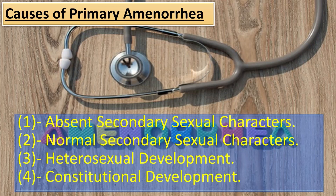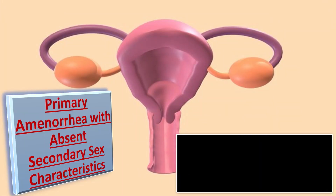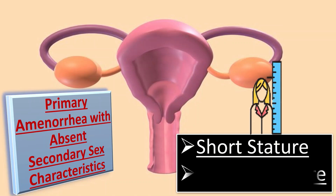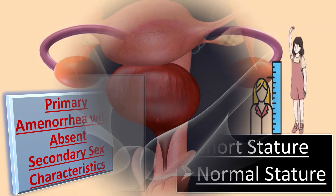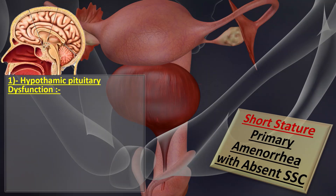We divide primary amenorrhea with absent secondary sexual characteristics into two main groups: the group with short stature and the group with normal stature. In the case of short stature, we have two further subgroups. The first is hypothalamic pituitary dysfunction, and the second is ovarian failure.